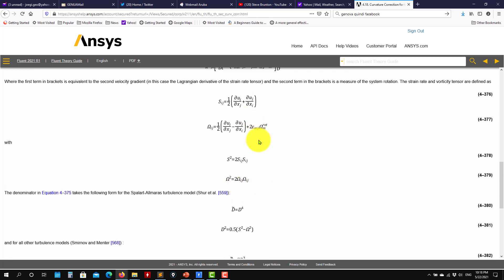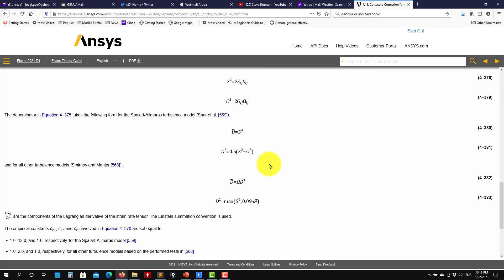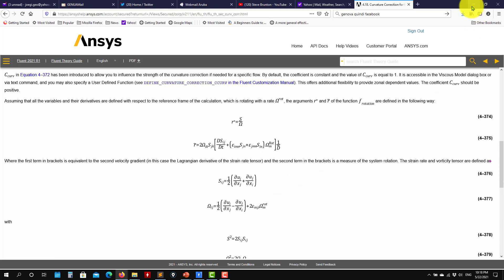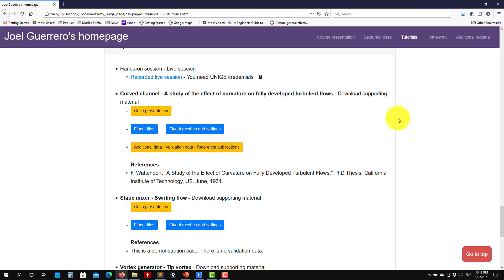According to that, it will do some correction like something similar in the production limiter. So with that being said, let's see the first case, the curved channel.